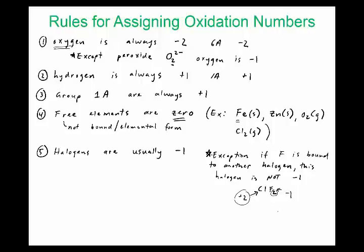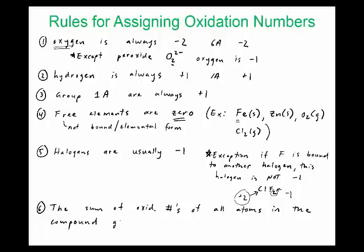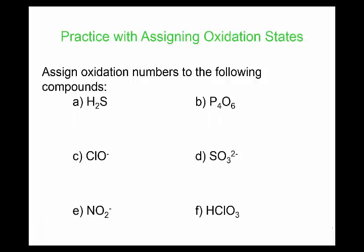The final and most important rule is: the sum of oxidation numbers of all atoms in the compound gives the net charge on the compound. This is how you actually assign oxidation states when a rule doesn't directly apply.